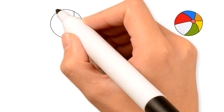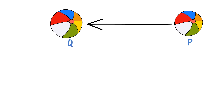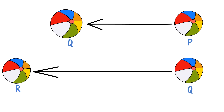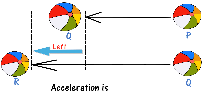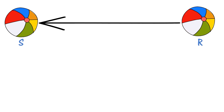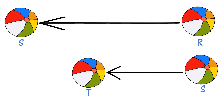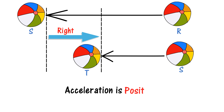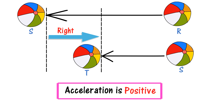If a body is at point B, moving to point Q with initial velocity VI, and from Q it speeds up to point R with final velocity VF — the change in velocity is towards the left, so acceleration is negative. If a body is at point R moving to point S with initial velocity VF — the change in velocity is towards the right, so acceleration is positive. This covers negative and positive acceleration.